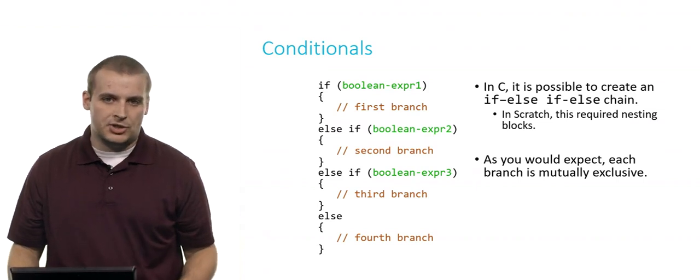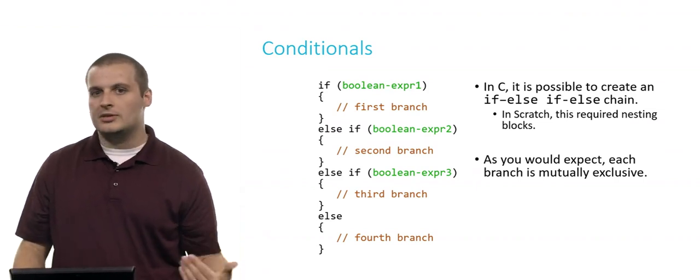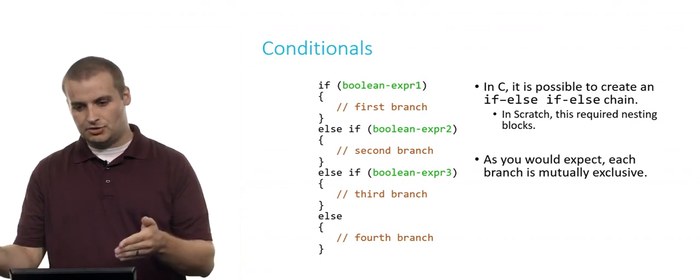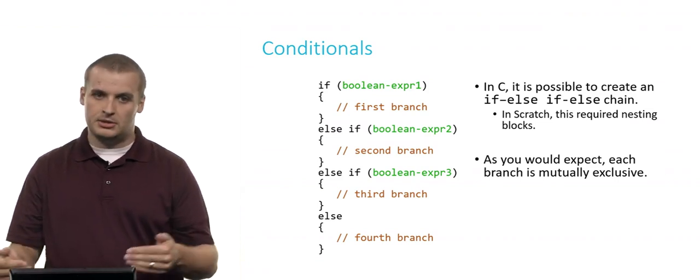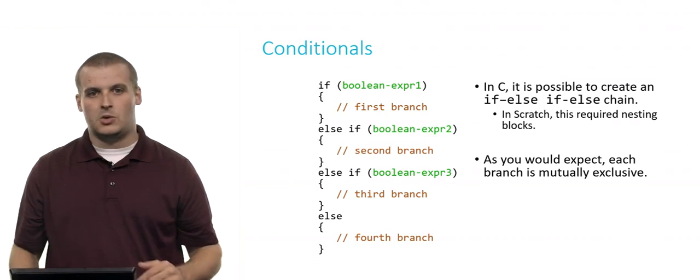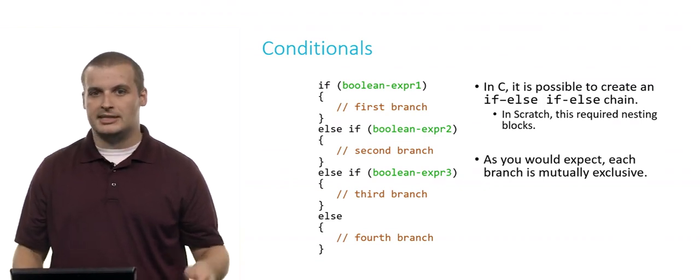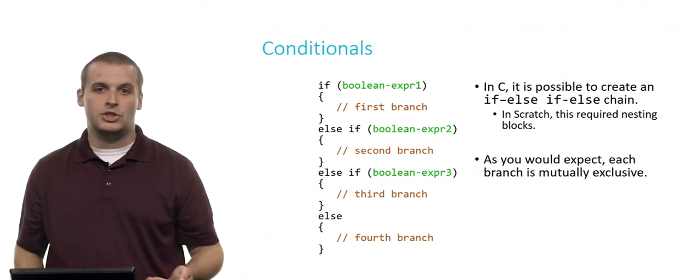Again, as you might expect, all of these branches are mutually exclusive. You can only ever go down one of the branches. If this is true, otherwise if this is true, otherwise if this is true, otherwise do this. So all four of the branches in this example are mutually exclusive. It's an if, else if, else chain.